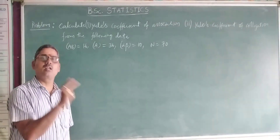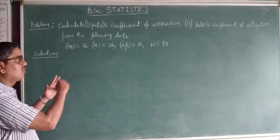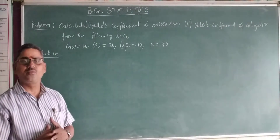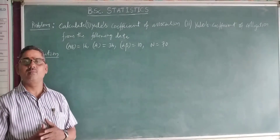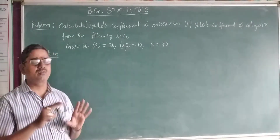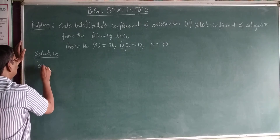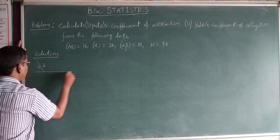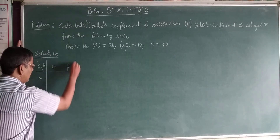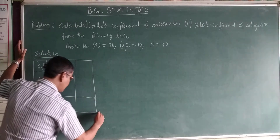If you formulate the table, you can easily calculate. I will explain how to calculate the remaining class frequencies in that table. To calculate Yule's coefficient of colligation and association, it is required to calculate the ultimate class frequencies. If you calculate those frequencies, the remaining is simply calculated with the formula. So now I write a table with attributes a and alpha, and b and beta.